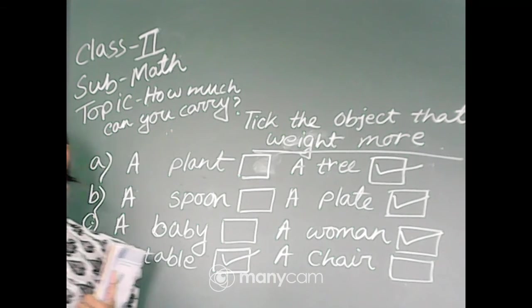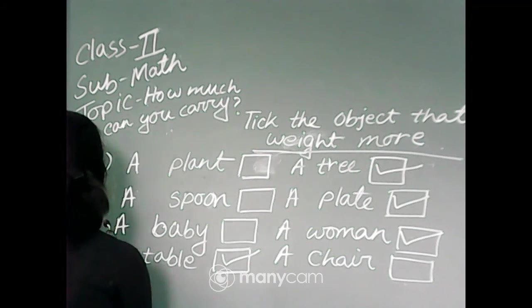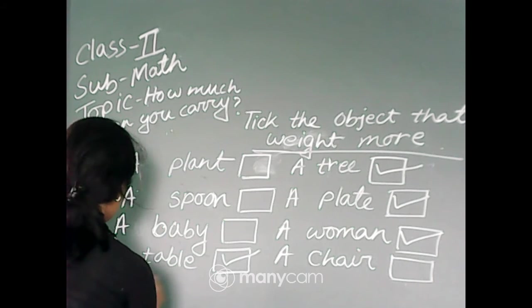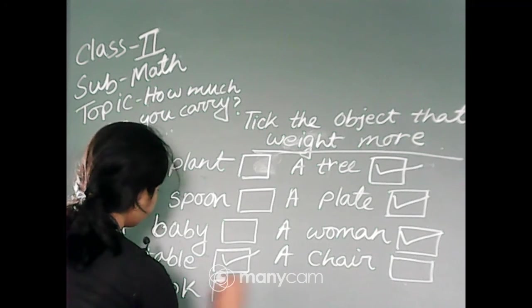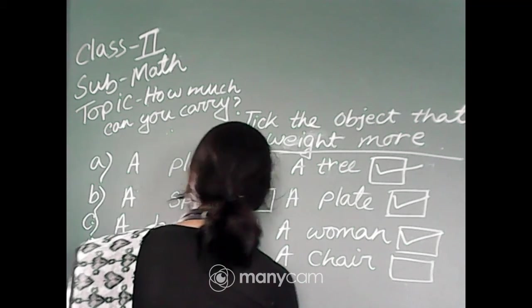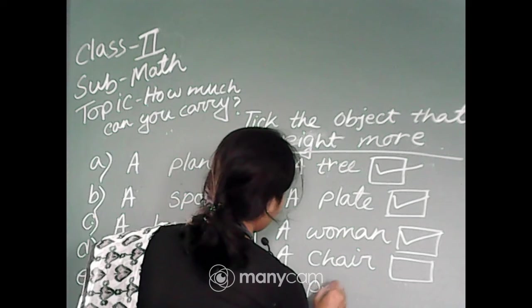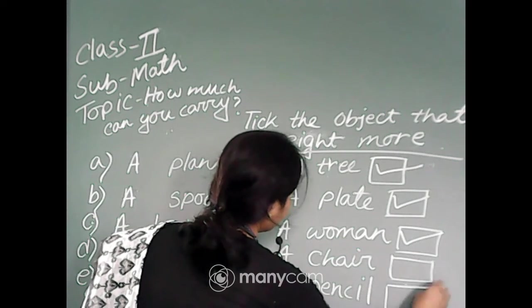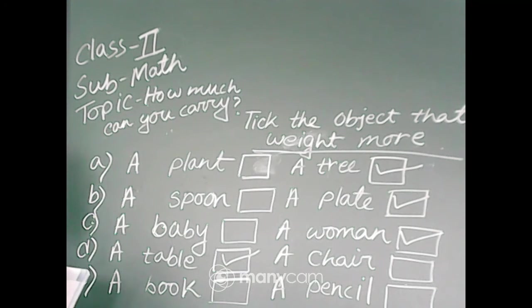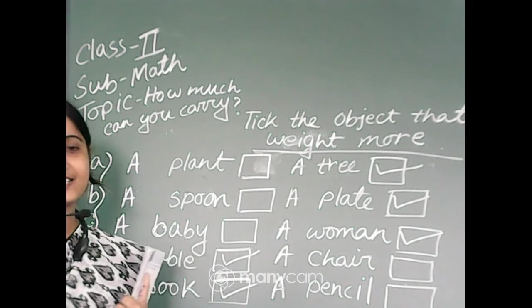Next, number E, this is number E. A book or a pencil, book or a pencil. Which object that weighs more? Book or pencil? Book, so you have to tick pencil. Okay.